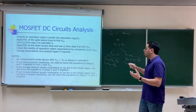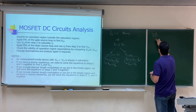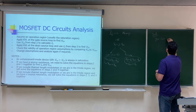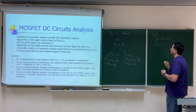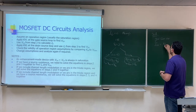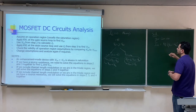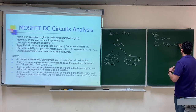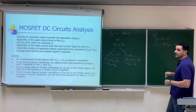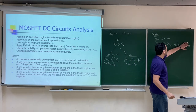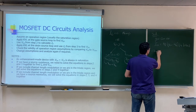By default, when assuming saturation, you use the saturation current equation: I_D = (K_N / 2) × (VGS − V_threshold)². If you include channel length modulation, you multiply by (1 + λ·VDS). However, if the problem does not mention λ or states that λ equals zero, you ignore the channel length modulation term.